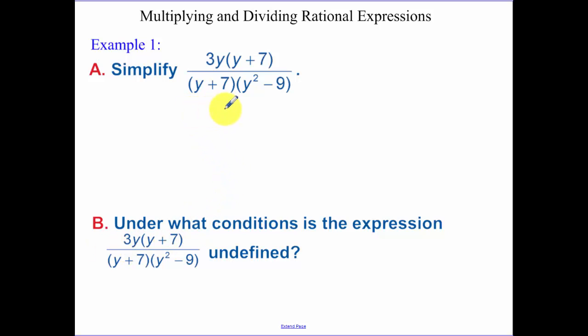So when you look at this rational expression, the entire thing needs to be completely factored. When you look at this, this bottom piece can still be factored. We go ahead and factor that bottom piece. Remember that's a difference of two squares, so that's y minus 3 and y plus 3.